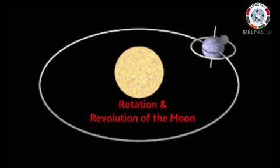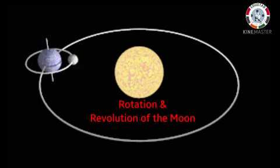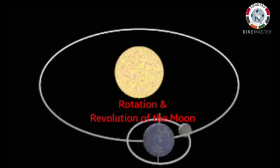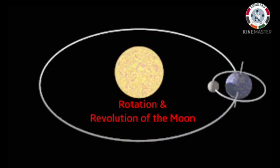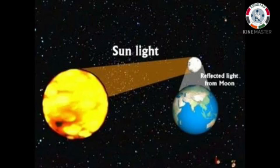Like our Earth, the Moon also has two kinds of movement. The Moon spins or rotates on its own axis, and the Moon also goes around the Earth — this is called revolution of the Moon. The Moon takes 27 and one-third days to go around the Earth once. The Moon completes one revolution in about the same time it takes to complete a rotation about its own axis. The Moon does not have its own light — it gets light from the Sun, which is thrown back to the Earth as moonlight.